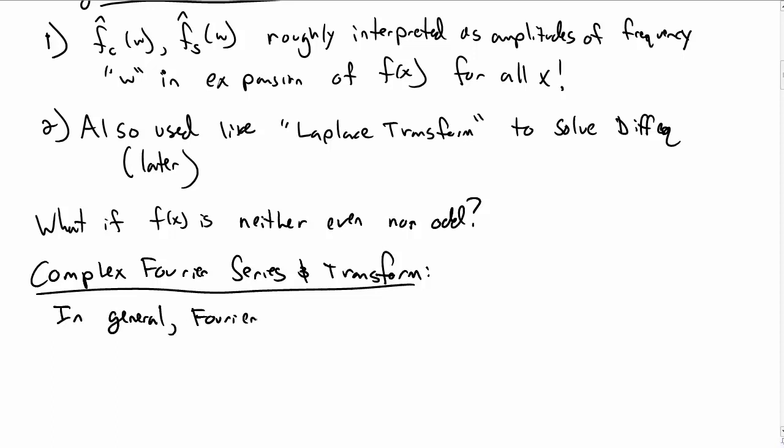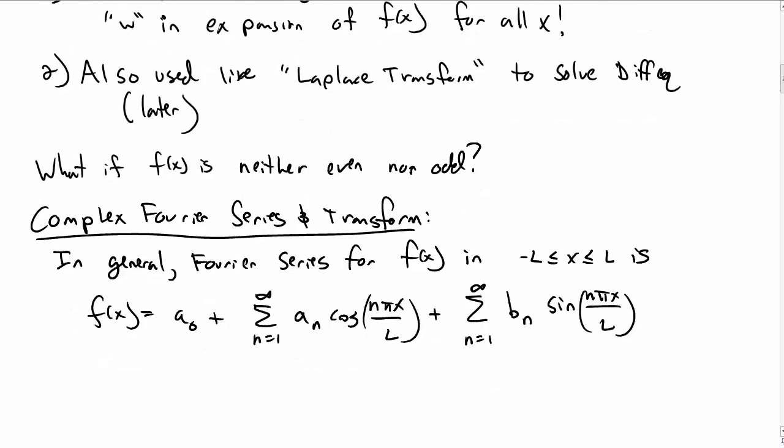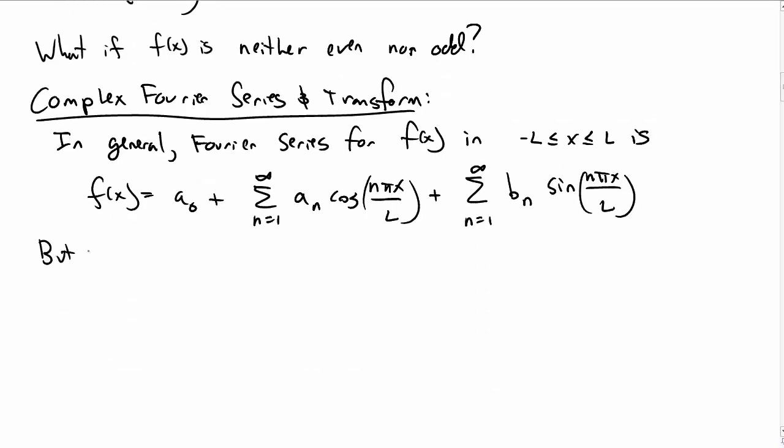So, in general, you can always write the Fourier series for any function in a region from negative l to l, and then periodic outside of that, as f of x is equal to a naught plus a sum over cosine plus a sum over sine. But we can actually make this a little bit easier. If you recall that cosine can be written in terms of complex exponentials, e to the ix plus e to the minus ix over 2, and sine of x can also be written in terms of complex exponentials.